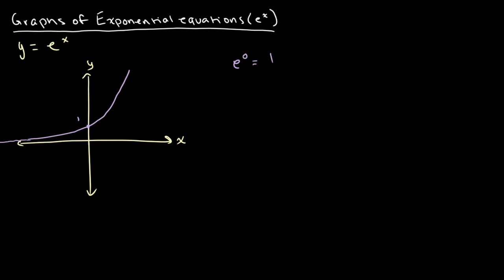On the left side, for our negative values of x, as x gets smaller and smaller, the value of y, or e to the x, gets closer and closer to 0. So it approaches 0.